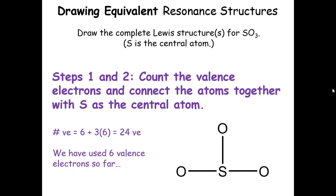Let's go ahead and go through it. For steps one and two, first we count up all our valence electrons and connect our atoms together. This is general for drawing any Lewis structure. We get six valence electrons for sulfur, three oxygens each contributing six, and no charge on the overall molecule, so we don't add or subtract any electrons, giving us 24 valence electrons.